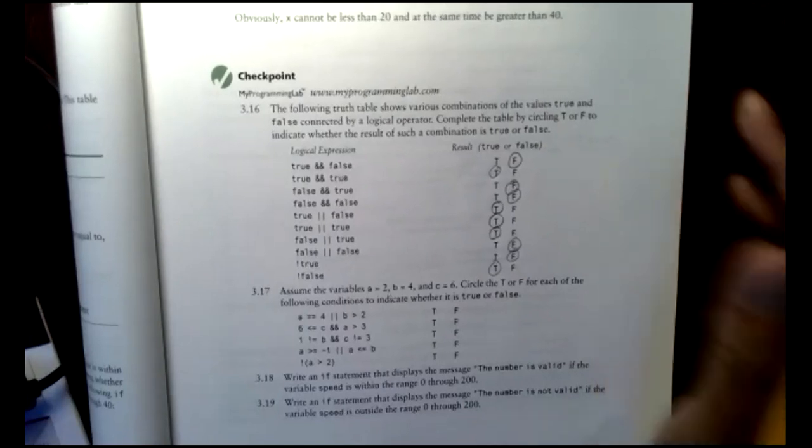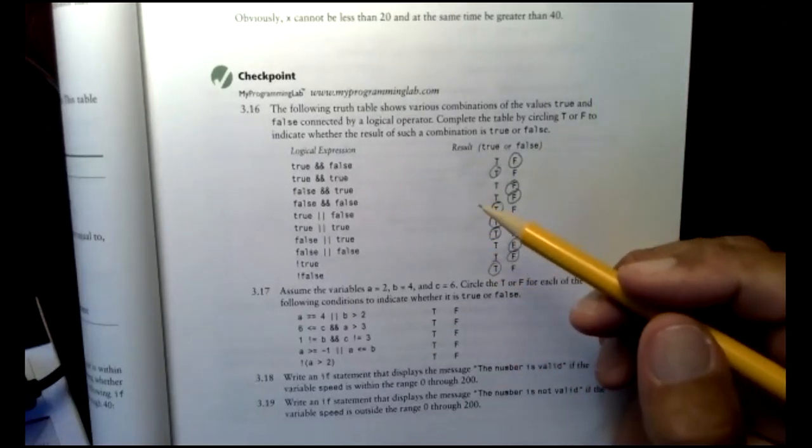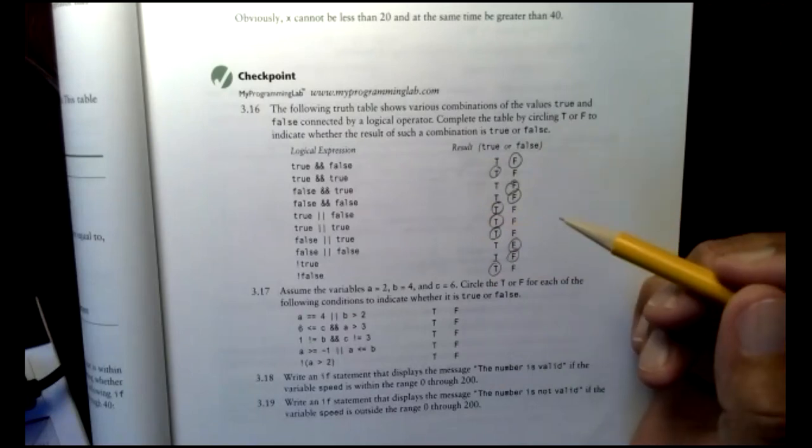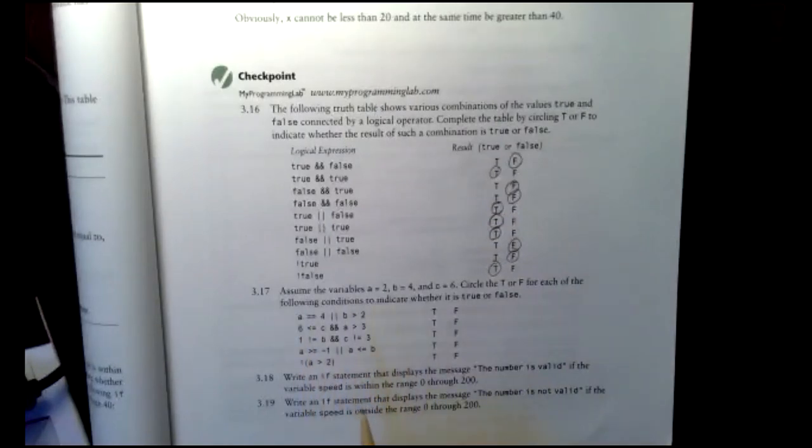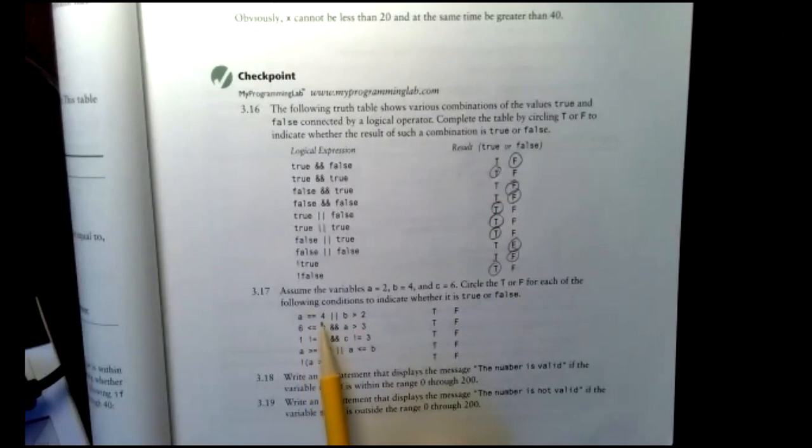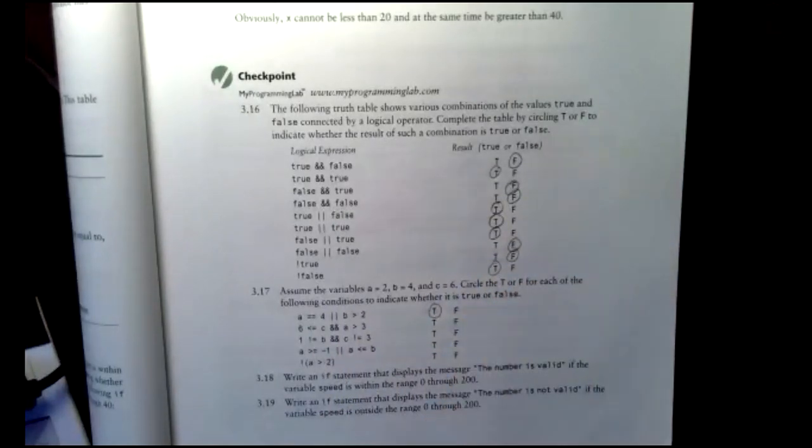All right. So for this next example, 3.17, I have if A equals 2, B equals 4, and C equals 6. 2, 4, and 6. So now I'm going to do a combination of the relational operators and the logical operators. So my first question is, again, A is 2, B is 4, and C is 6. Does A equal 4, or is B greater than 2? So let's start with A equal 4. Does A equal 4? No. That's false. Is B greater than 2? Yes. So I have false or true. That result is going to be a true.